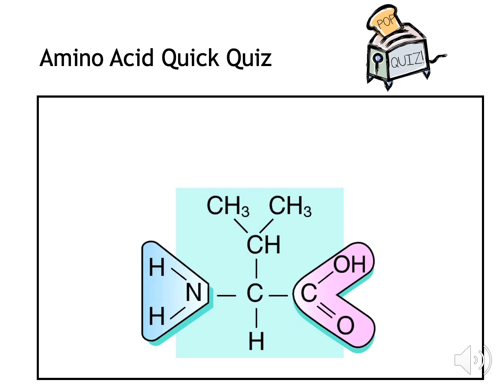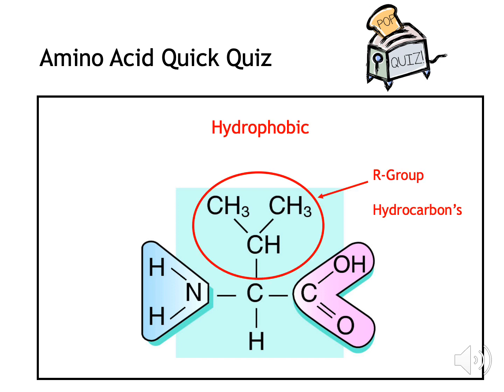Let's try another one — can you identify which type of amino acid this is? Well done if you got this correct. This is a hydrophobic amino acid, because it only contains hydrocarbons — there are only carbons and hydrogens in the R-group.